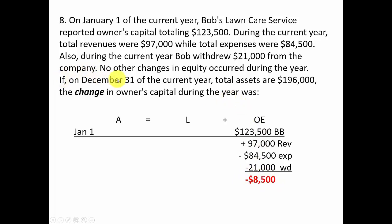The December 31st total assets figure of one hundred ninety-six thousand dollars is irrelevant to finding the change in owners equity. All we need is to combine the three pieces — revenues, expenses, and withdrawals — which together decrease the beginning capital balance by eighty-five hundred dollars.